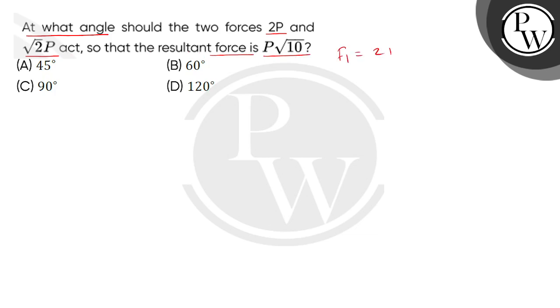Given, we have the first force as twice of P and the second force as square root of 2P. And the resultant force, R, is given as P square root of 10.